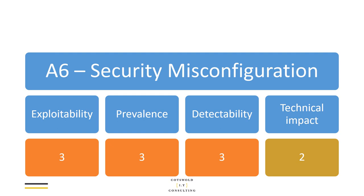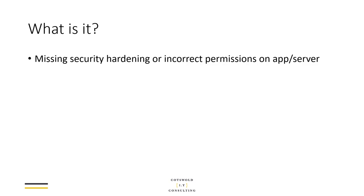The technical impact could be quite major, but in many cases it's not usually as serious as things like injection attacks and misconfigured access controls. What we're really talking about here is where certain security hardening, or maybe permissions on an application or server, are not set up correctly — they might be missing completely, set to their defaults, or misconfigured in some other way which allows an attacker to take advantage of usually some kind of backdoor.